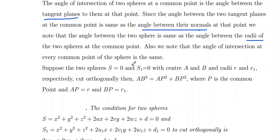Suppose the two spheres are named S equal to zero and S1 equal to zero, with centers A and B respectively. The first sphere has center A and the second sphere has center B. The first sphere has radius R and the second sphere has radius R1.